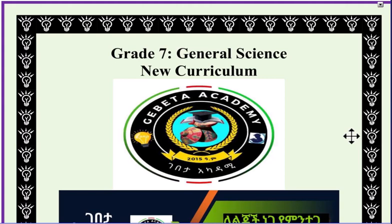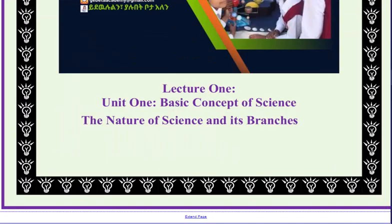Hello everyone, welcome to the YouTube channel and welcome to the webinar for general science. We are going to talk about Unit 1, lectures 1 through 4. The nature of science and its branches. Unit 1: basic concepts of science. We are going to talk about the nature of science and its branches.